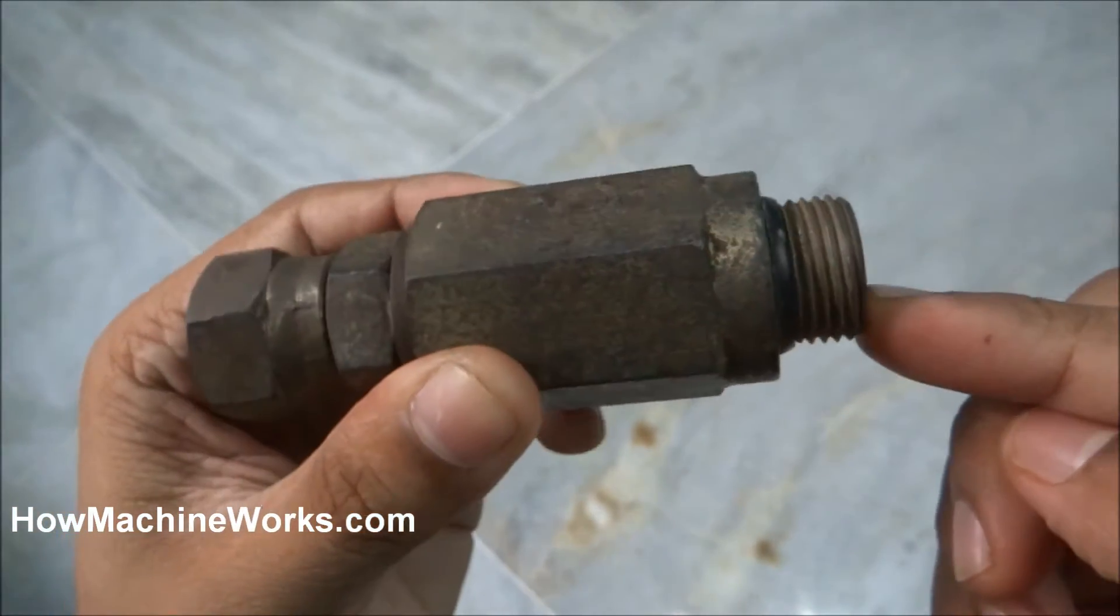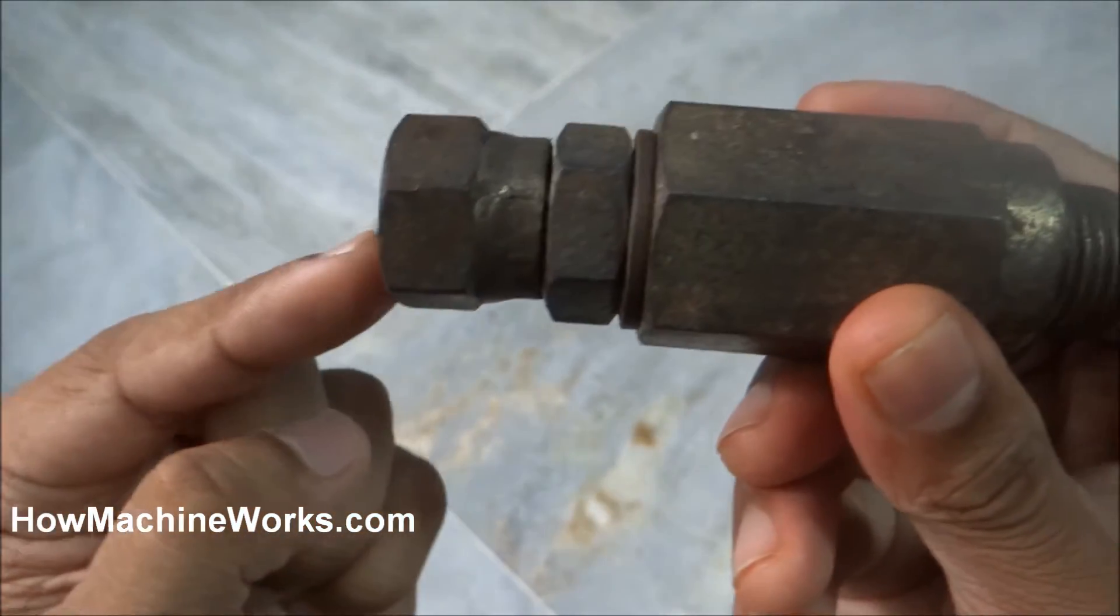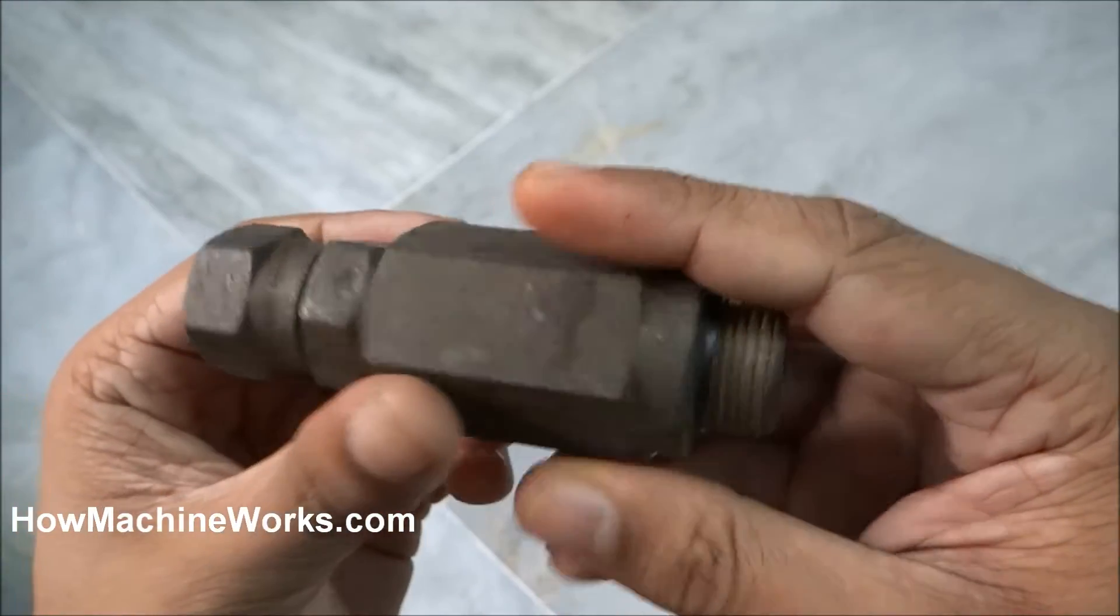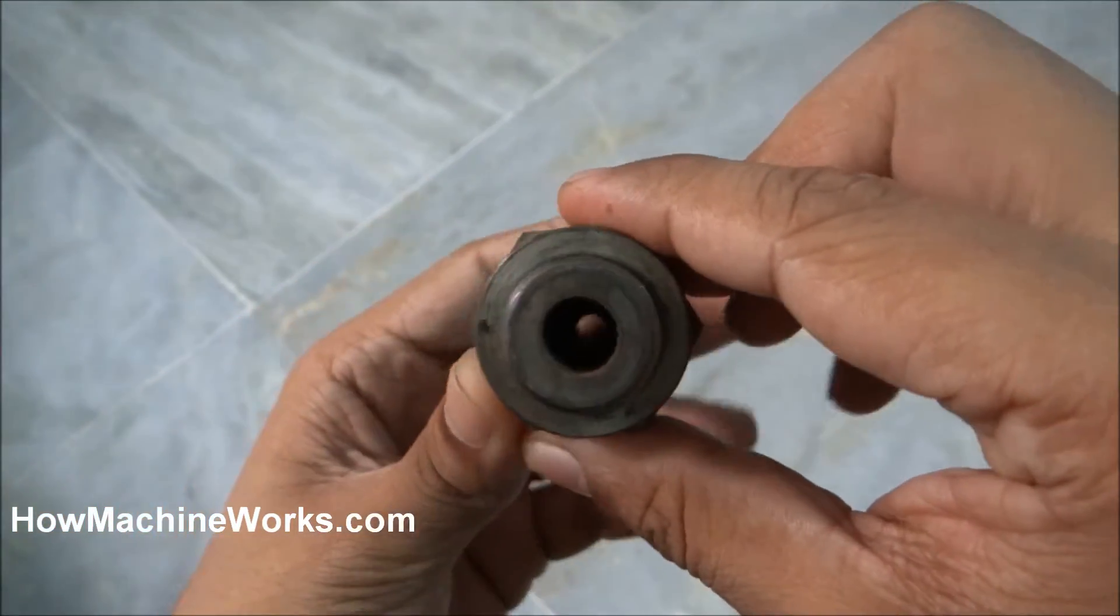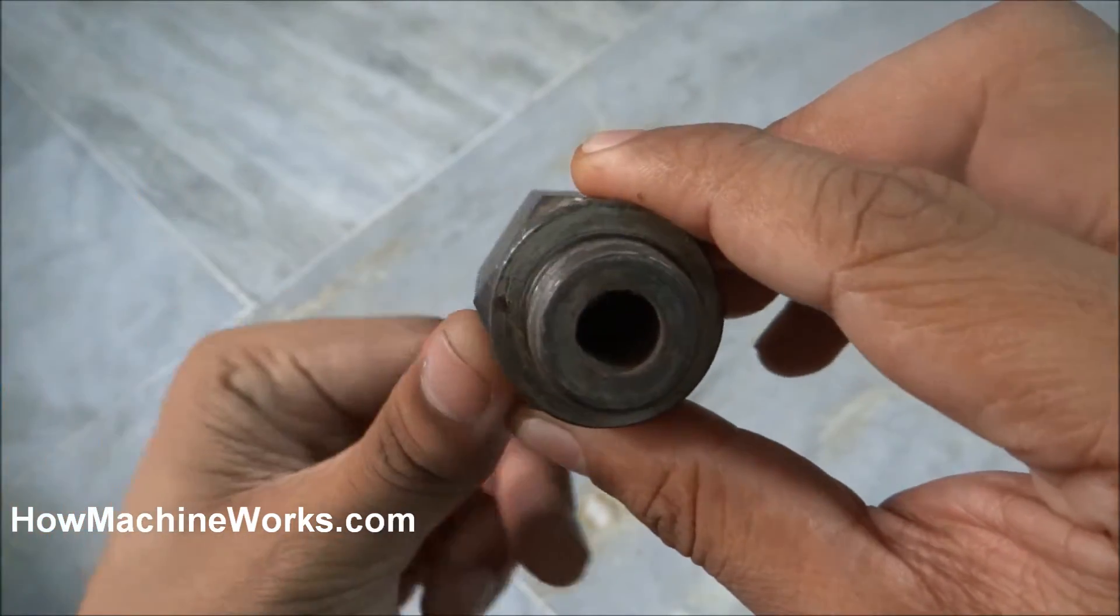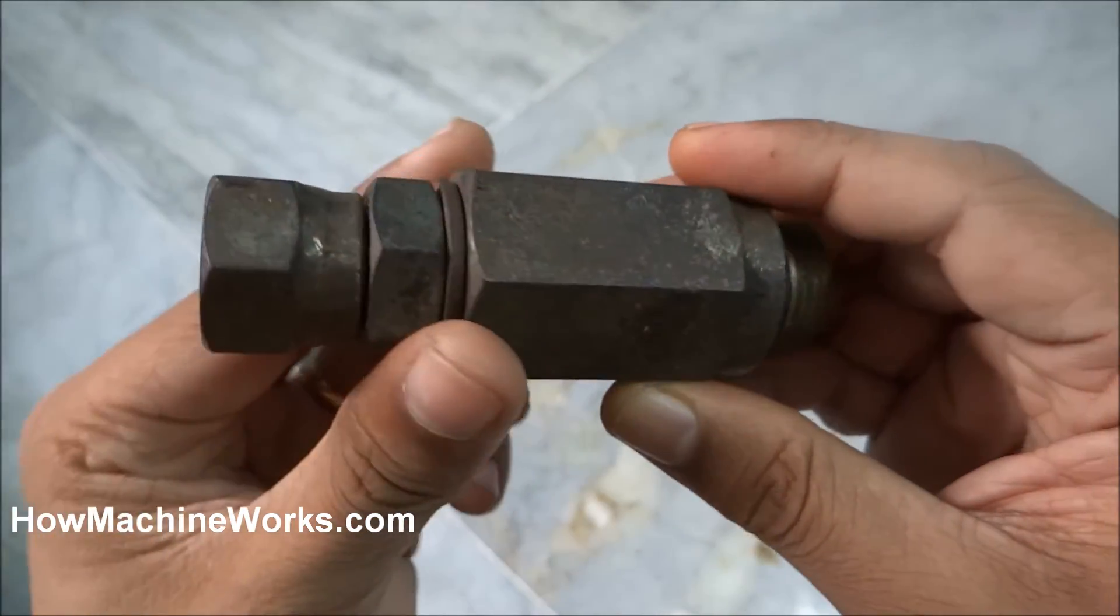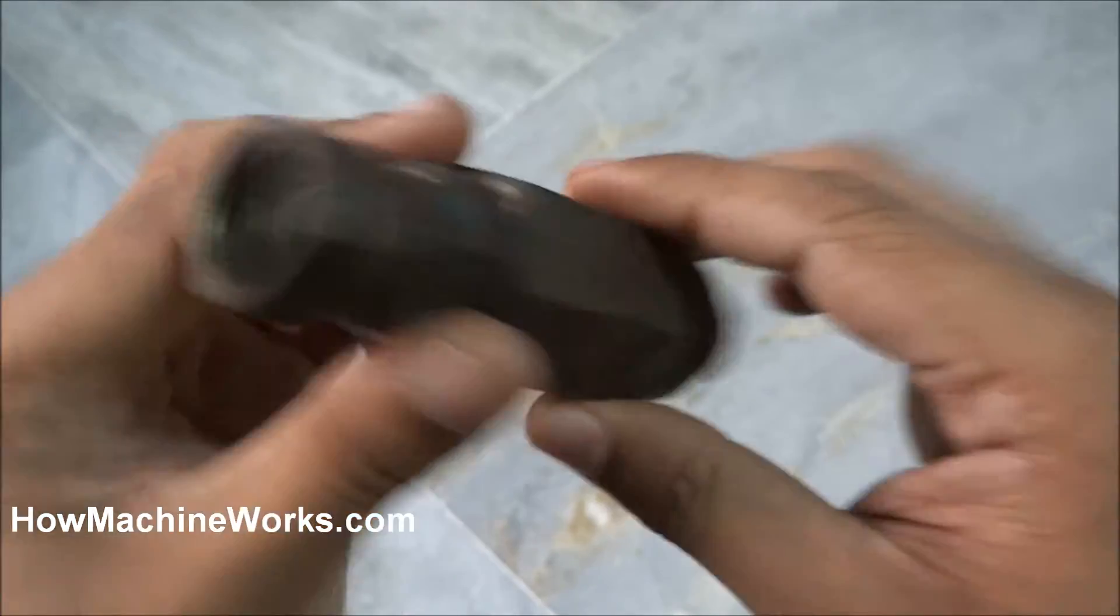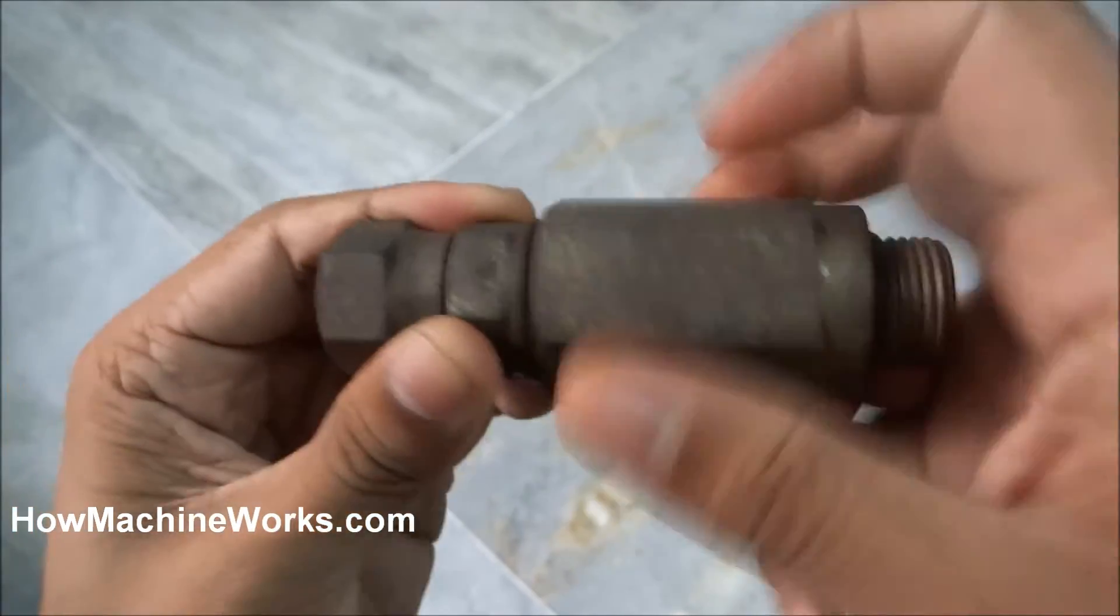This is the inlet side and this is the outlet side. The function of the one-way restrictor is to create more flow in one direction and restrict the flow towards the other direction. There will be less restriction and more flow in the forward direction, and lesser flow in the reverse direction. Let's open it up and see how it exactly works.